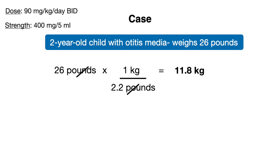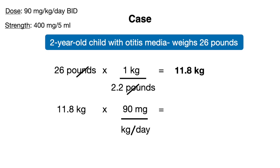We then take this weight in kilograms and multiply by our required antibiotic dose. Here we have 90 mg/kg/day, so we're calculating the entire antibiotic dosage to be given in a full day. This gives us 1062 mg per day.